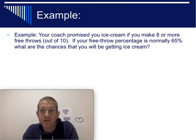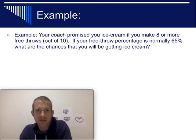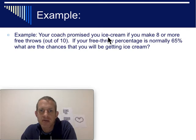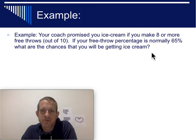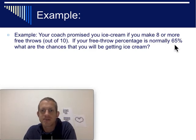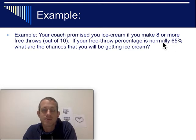Try this problem on your own: your coach is promising you ice cream if you can make eight or more free throws out of ten. So if you make eight, nine, or ten, you get ice cream. Your free throw percentage is normally 65%. What are the chances you'll be getting ice cream? It's not quite the 80 or 90 percent you'd need to reliably get eight out of ten, but you might have a good day.